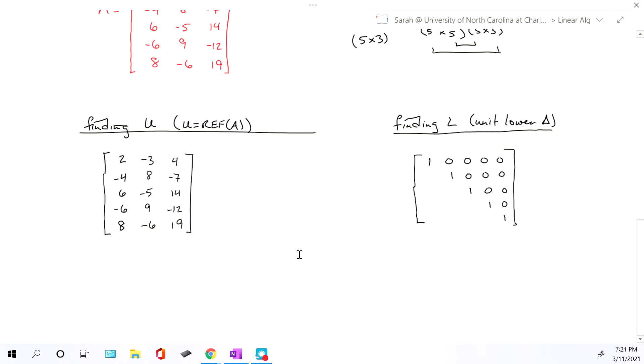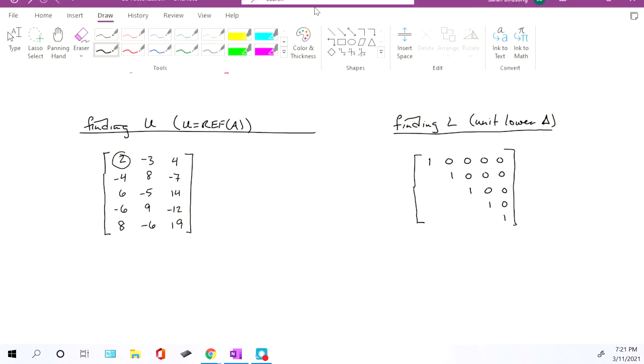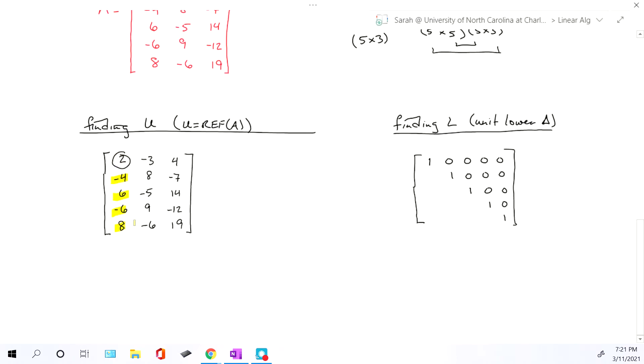So now we go back to matrix A. We find the first pivot, which in our case is going to be that number 2, and then we want to zero out all of the numbers below 2. You always take the pivot row or the row that your pivot is in and use it to get rid of those numbers below it. So here on row 2, we'll add twice row 1 to row 2. Row 3 will subtract 3 times row 1 to get row 3. Row 4 will add 3 times row 1 to get the new row 4. And for row 5, we will subtract 4 times row 1 to get the new row 5.